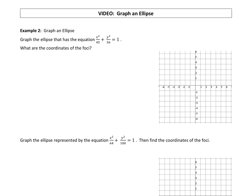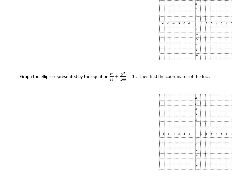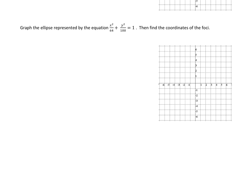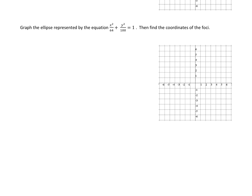Let's work on graphing these ellipses. I'm actually going to start with the second one — I think this one's a little bit easier to graph, and then we'll be able to graph the first one once we see how these are going to work. The equation of our ellipse is x squared over 64 plus y squared over 100 equals 1.